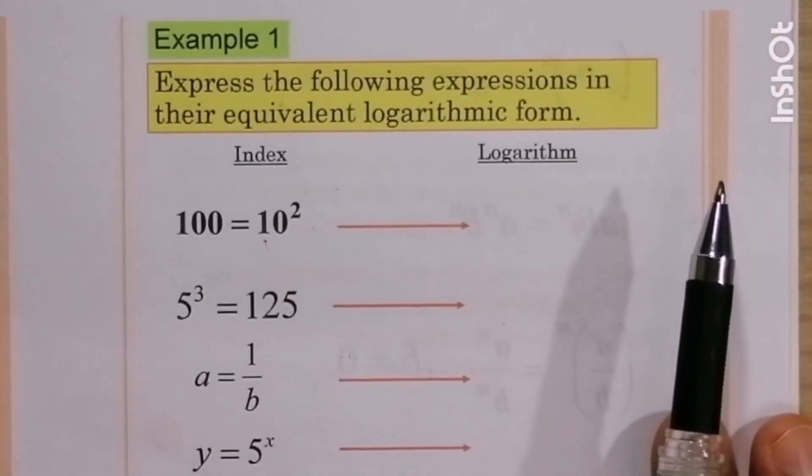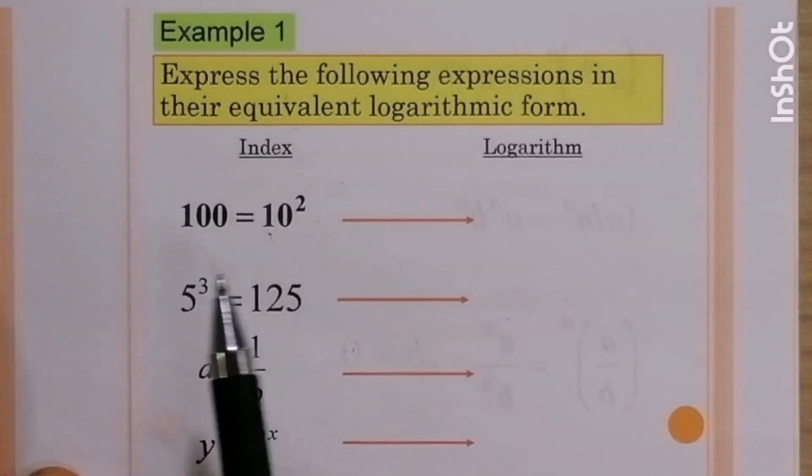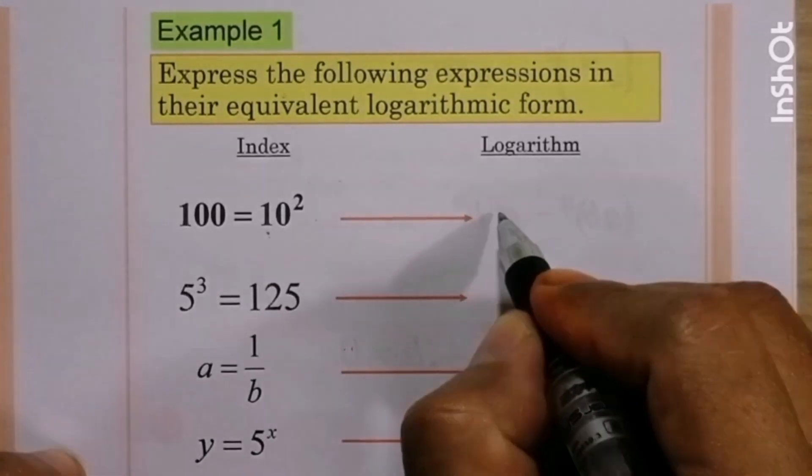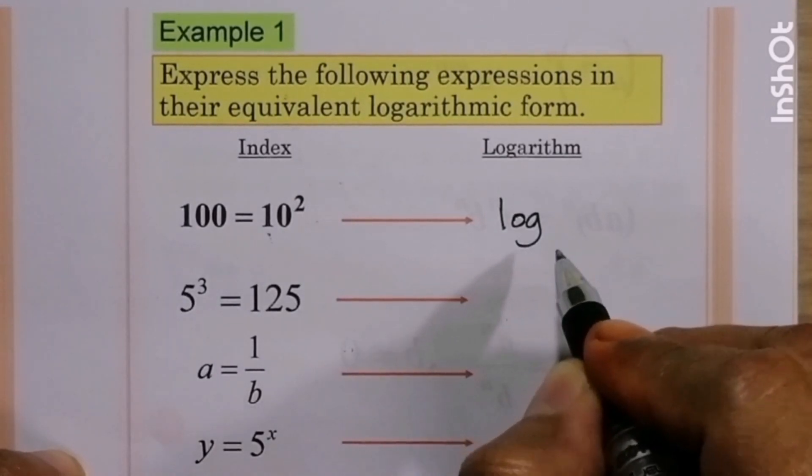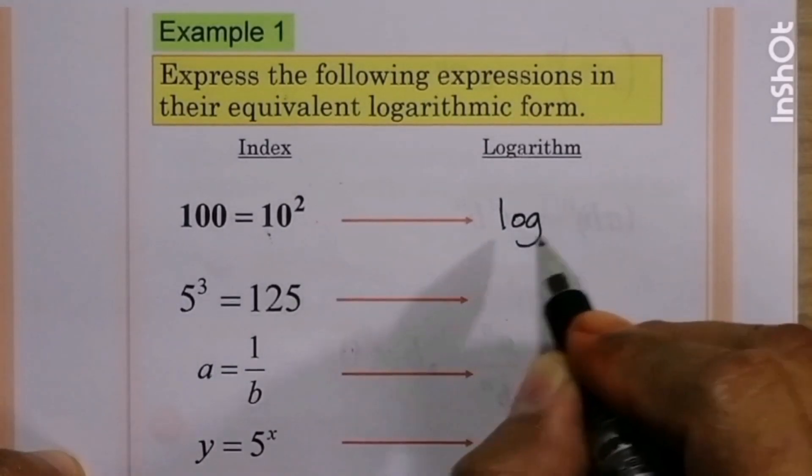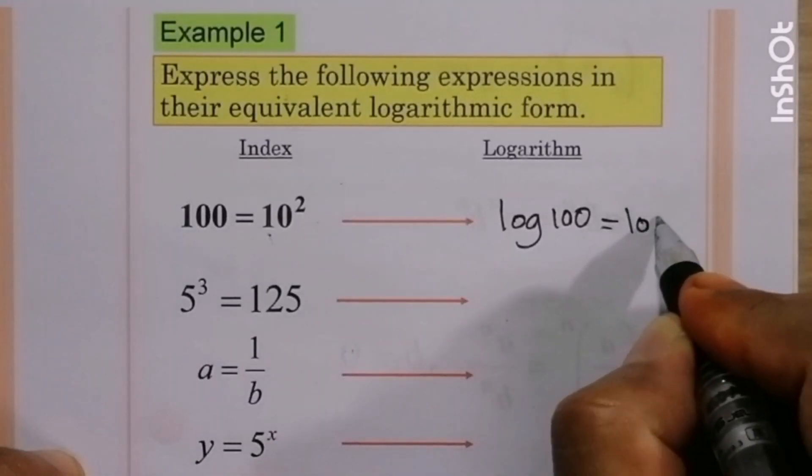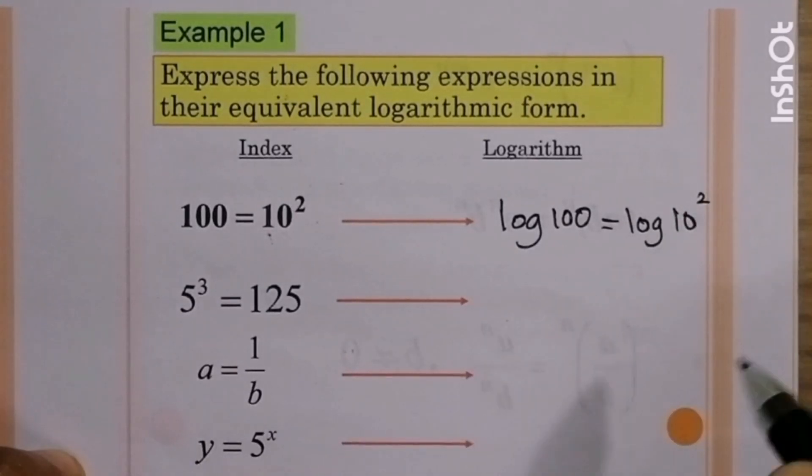Look at the example. Express the following expression in their equivalent logarithm form. For example, 100 equal to 10 squared. In logarithm, taking log base 10 both sides, we just write log 100 equal to log 10 squared, then the answer is 2.